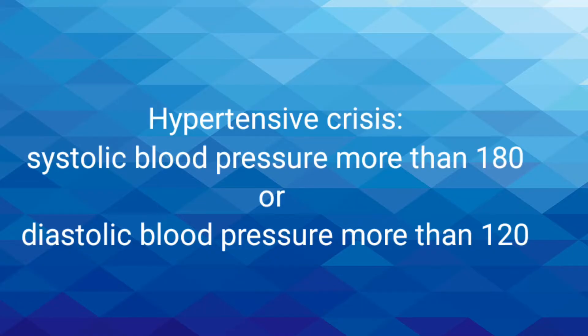The last stage, stage 3, is the stage of hypertensive crisis. In this, the blood pressure goes beyond 180 by 120 — that is the systolic blood pressure has crossed 180 mmHg and/or the diastolic blood pressure has crossed 120 mmHg. This is a hypertensive crisis. If we detect any patient suffering from such high blood pressure, we immediately hospitalise them and treat through intravenous drugs, because such blood pressure can cause an immediate brain stroke or a cardiac ischemic attack. This is an emergency.